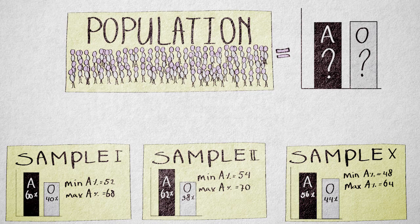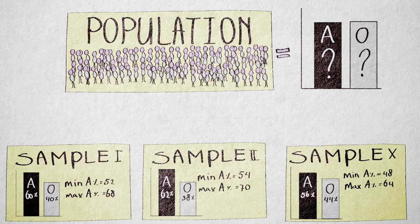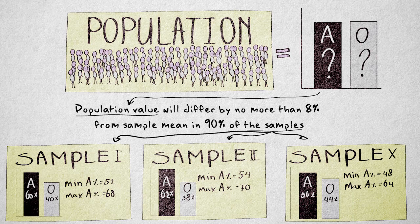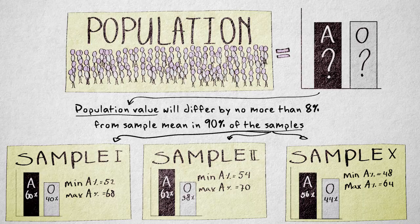This means we can say that with repeated sampling, the population value will differ from the sample value by no more than 8% in 90% of all the samples.